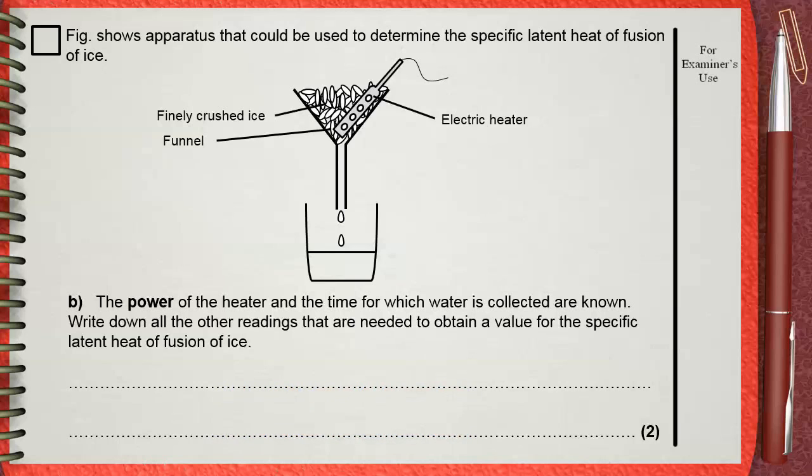This is the equation used to calculate the specific latent heat of fusion of ice. LF equals Q divided by M.